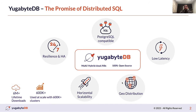The database offers high resiliency and high availability. The multi-node architecture allows you to survive different failures on the node level, zone level, region, or entire data center. It allows you to do zero downtime upgrades and security patching. Unlike traditional databases, you can scale YugabyteDB horizontally to serve high throughput like billions of operations a day and store hundreds of terabytes of data.